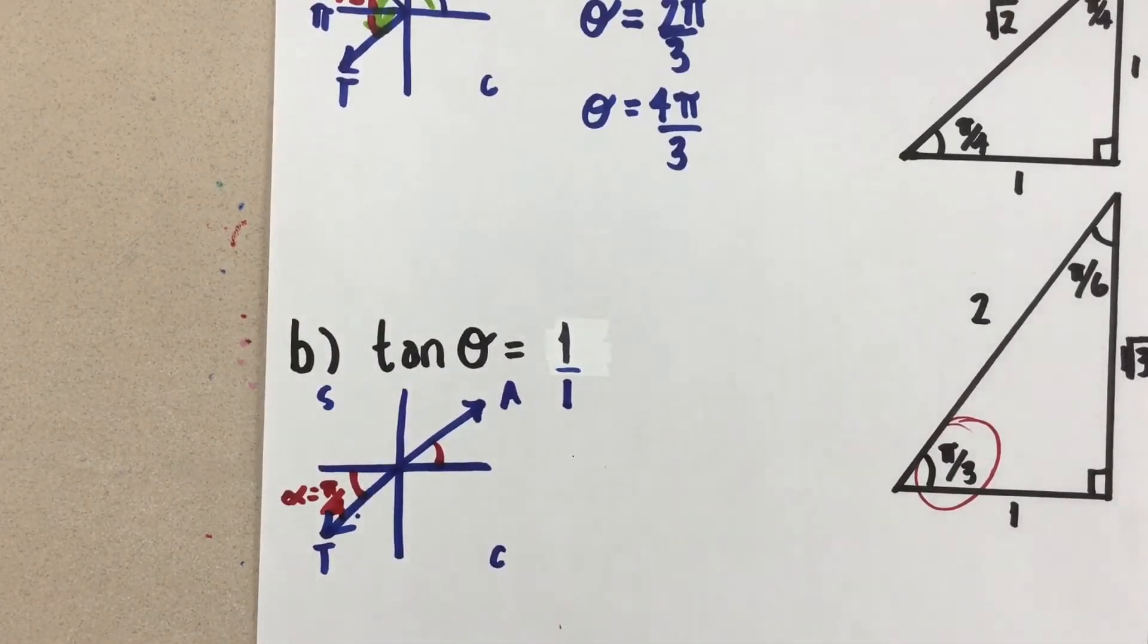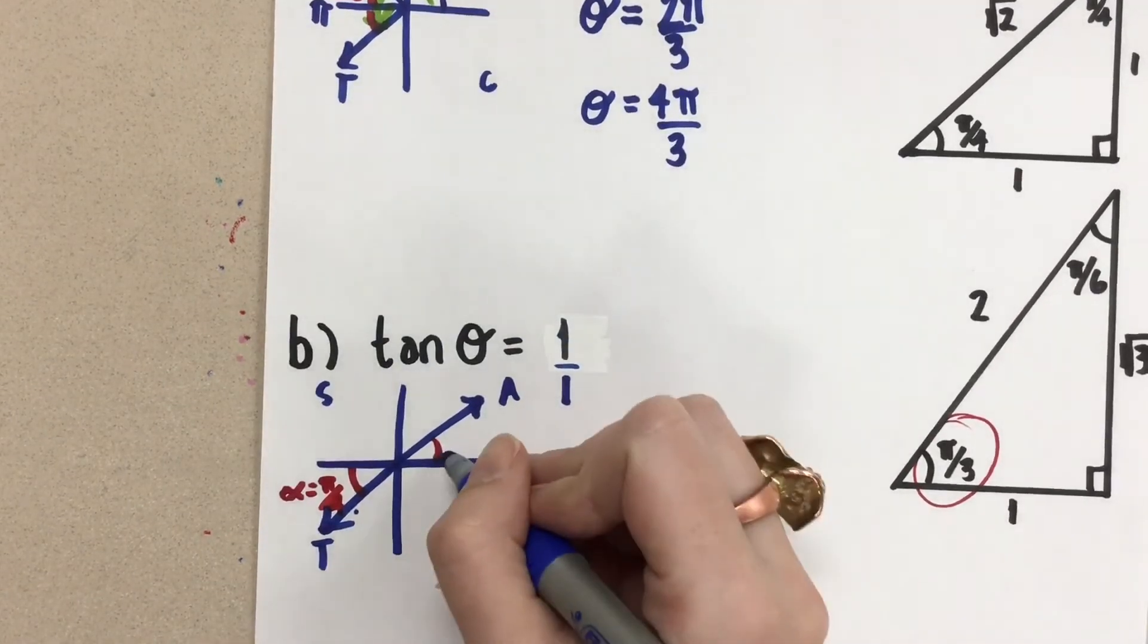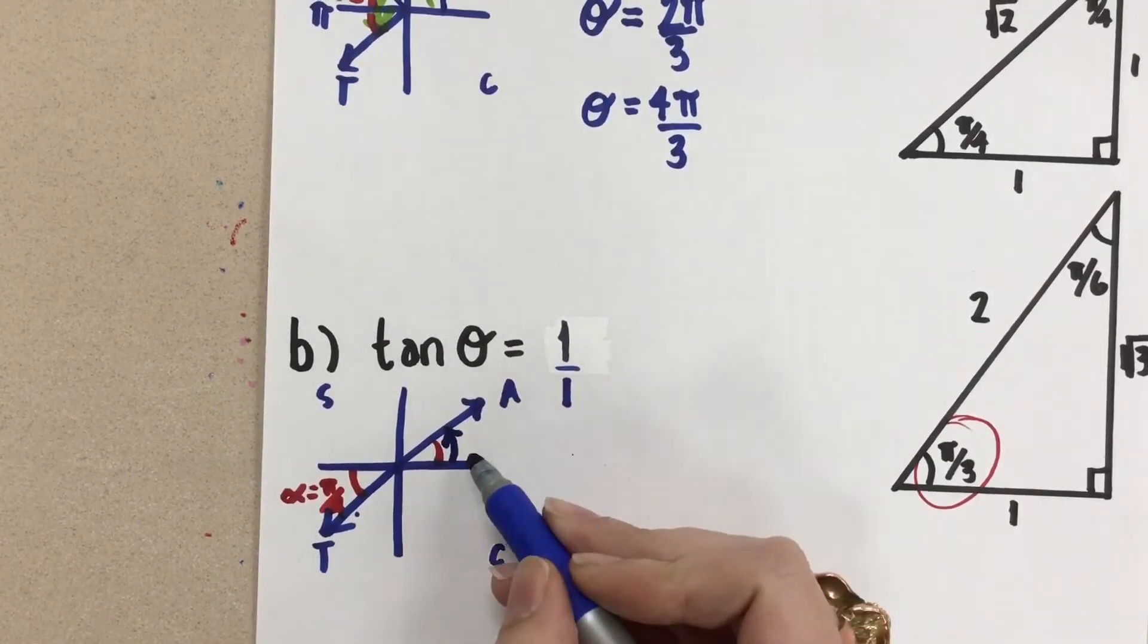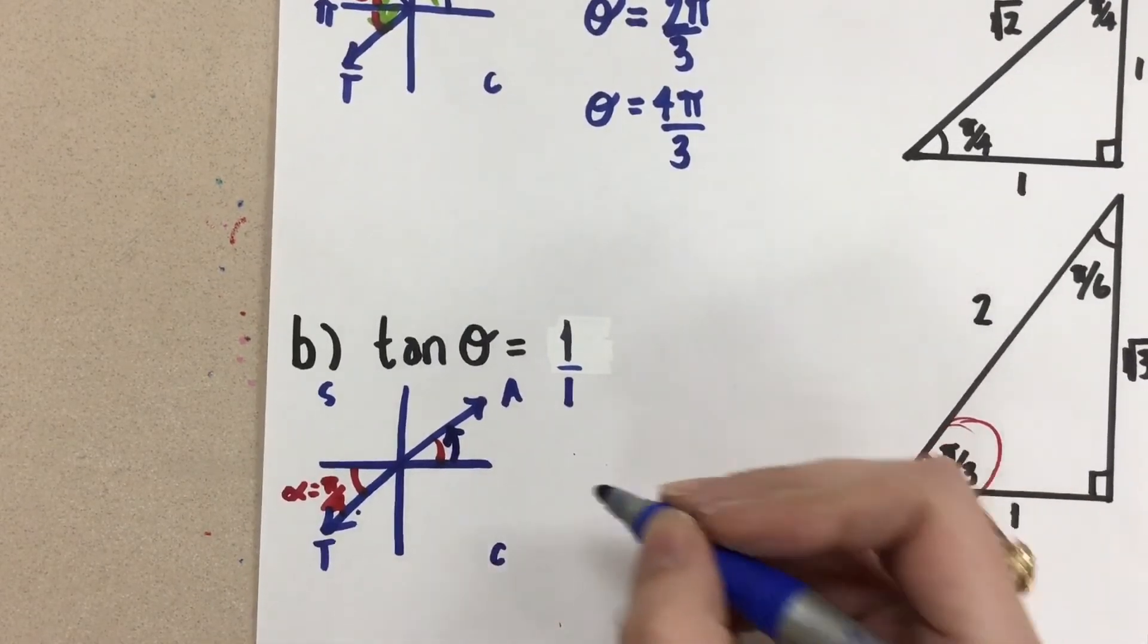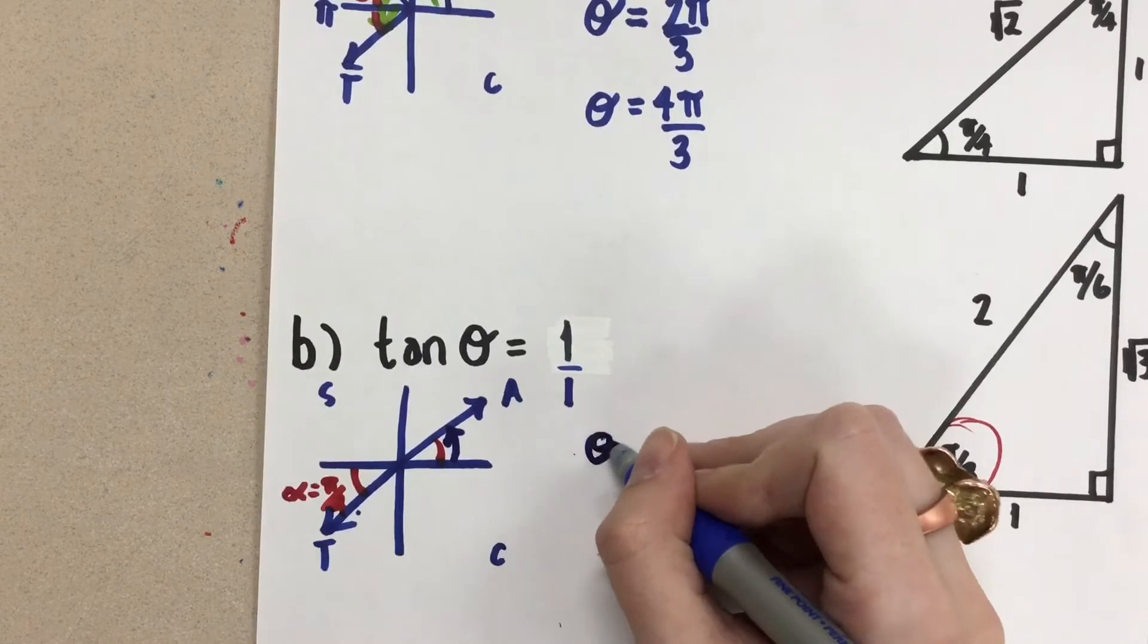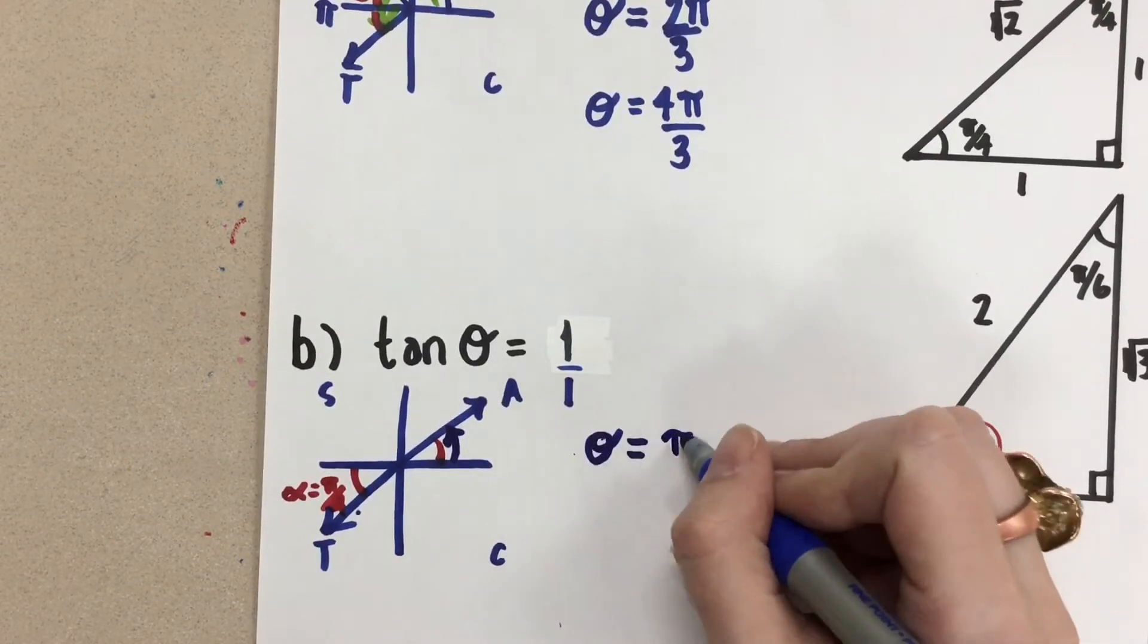Okay, so again, we're looking at the two principal angles we have. The first one is here. Well, a related acute angle in the first quadrant is always the same as the principal angle. So this one's nice to do. Our first angle is just π over four.